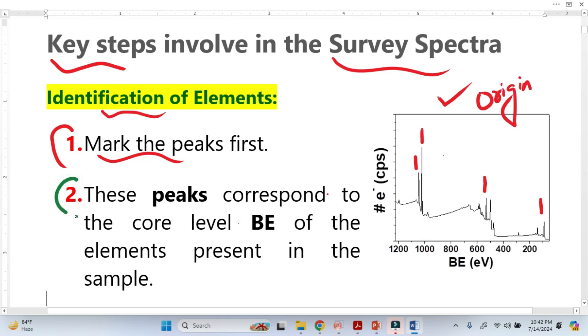Now the second step is these peaks correspond to the core level binding energy. Like this here, you see this peak belongs to this binding energy, this peak belongs to this binding energy. Let's suppose this peak belongs to 900 electron volts here. We can also do this by Origin.